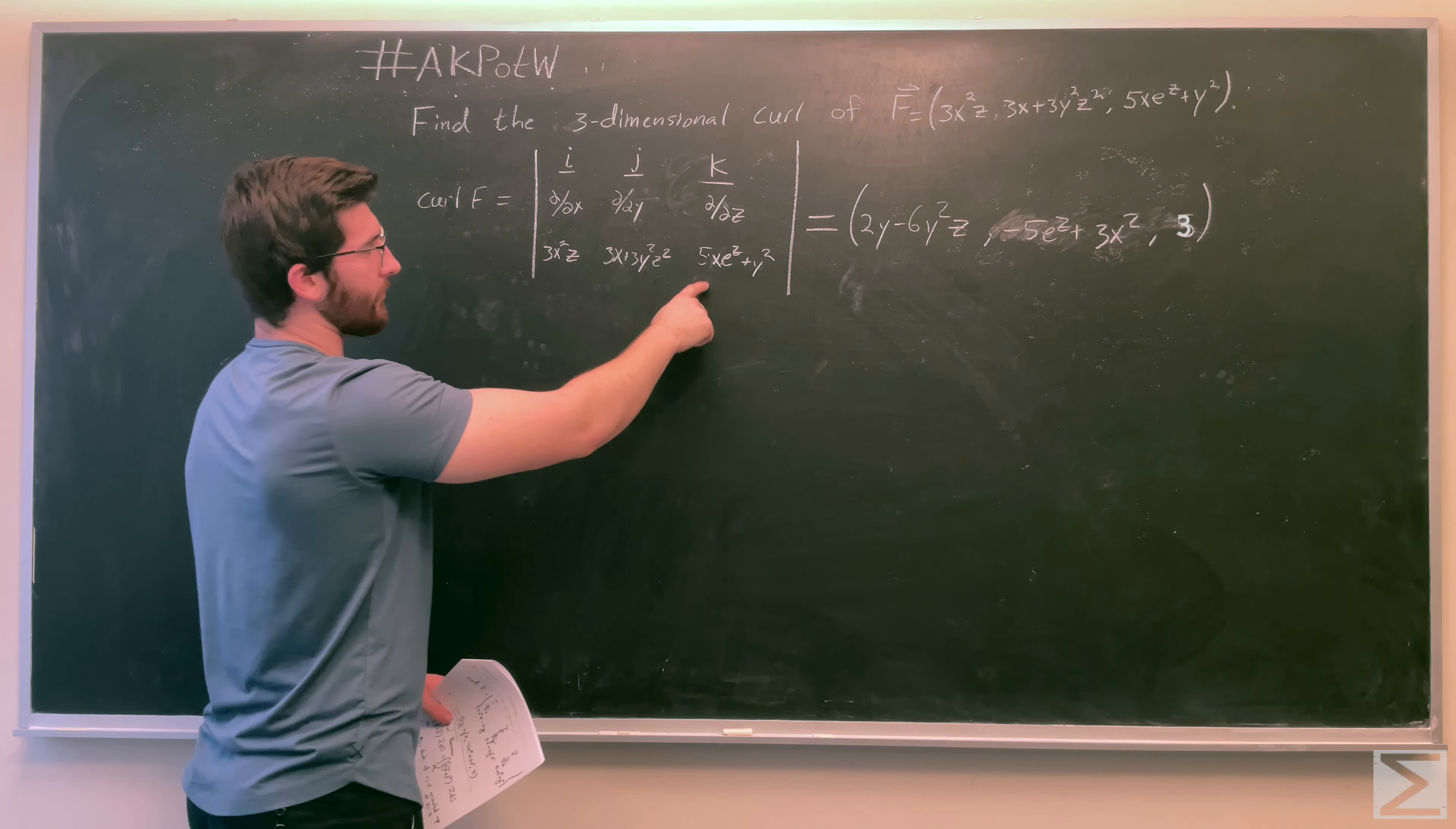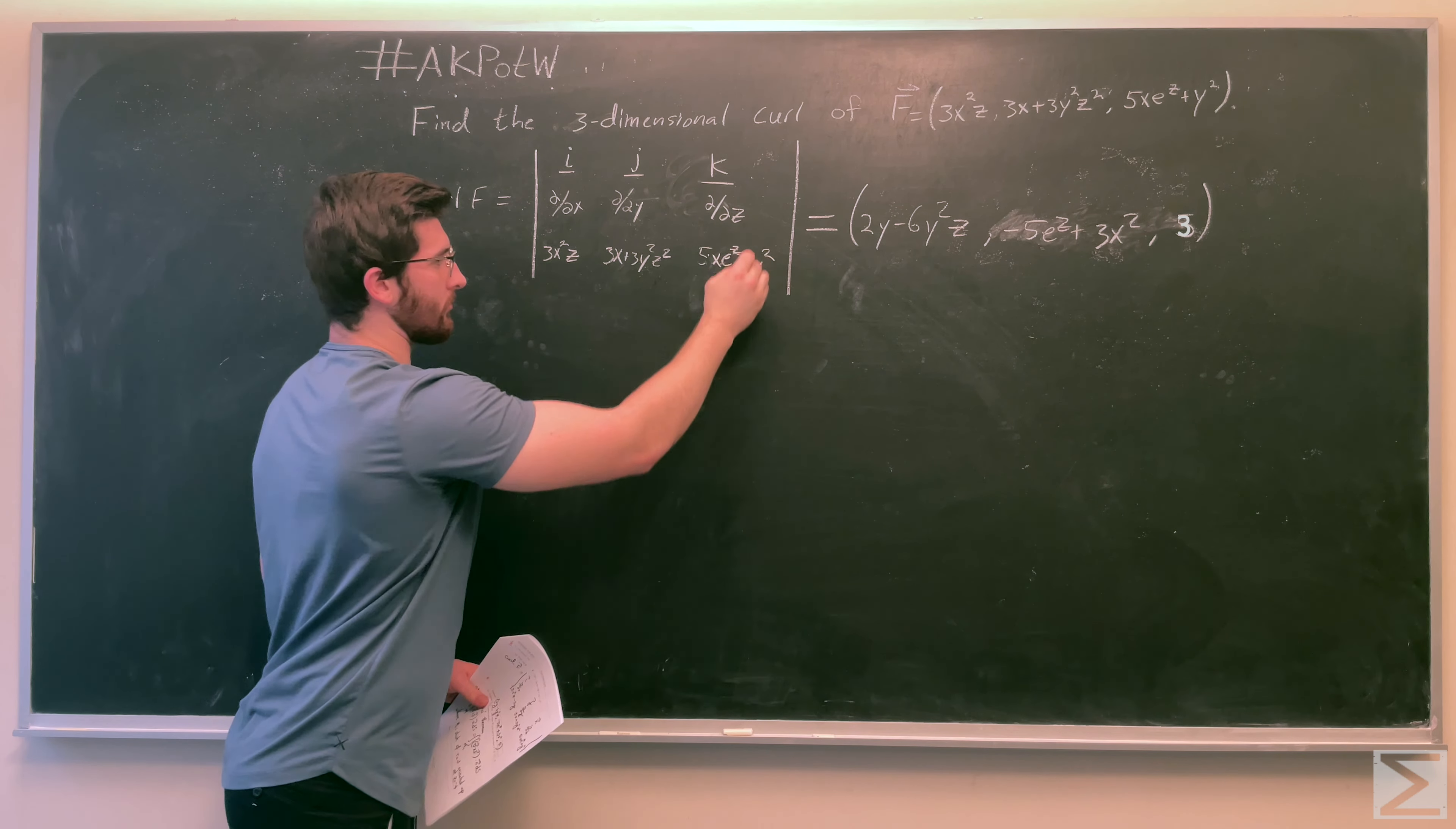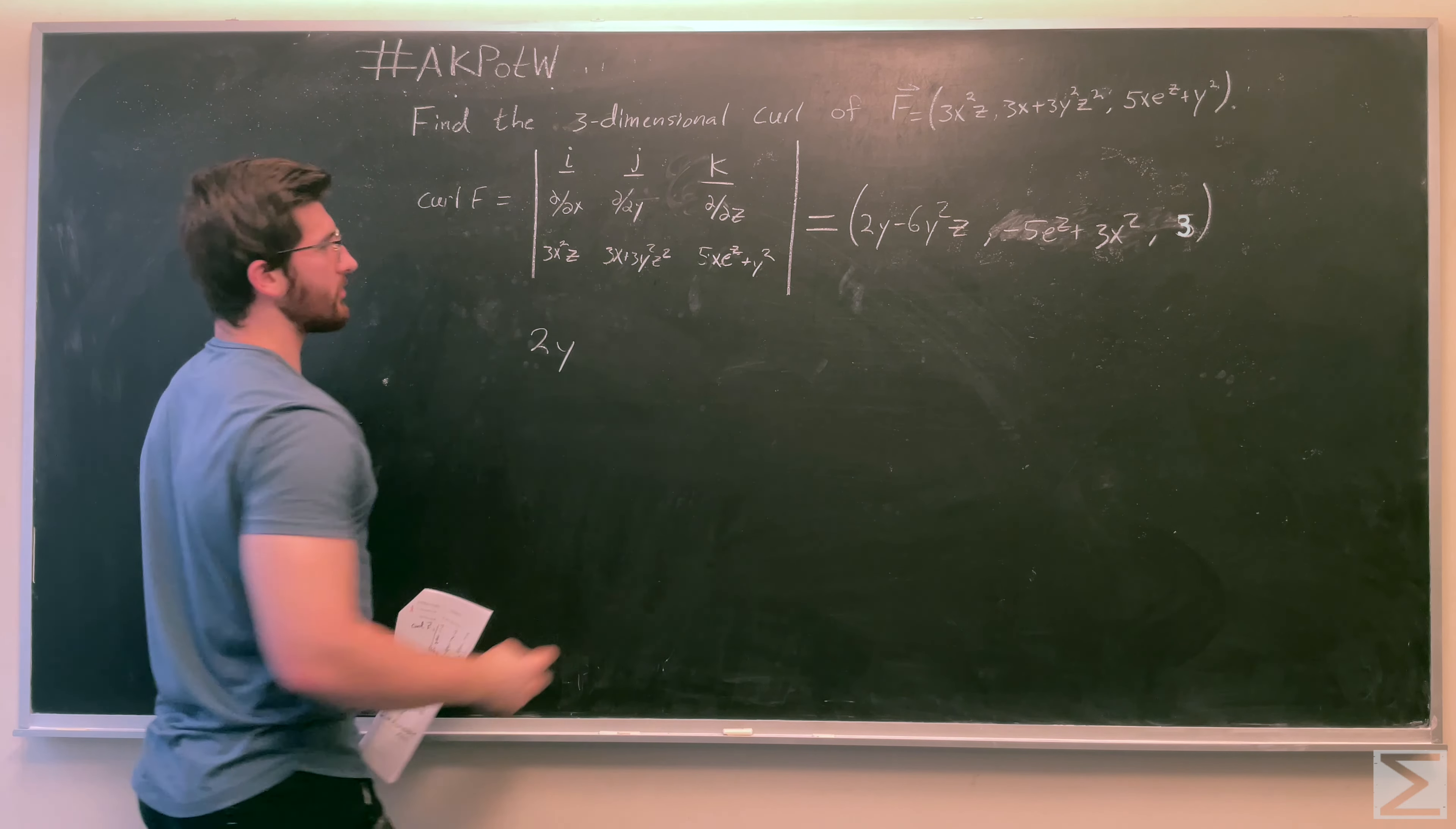So you're going to take the partial derivative of 5XE to the Z plus Y squared, and take that partial derivative with respect to Y. So in this case, it's going to be 2Y.